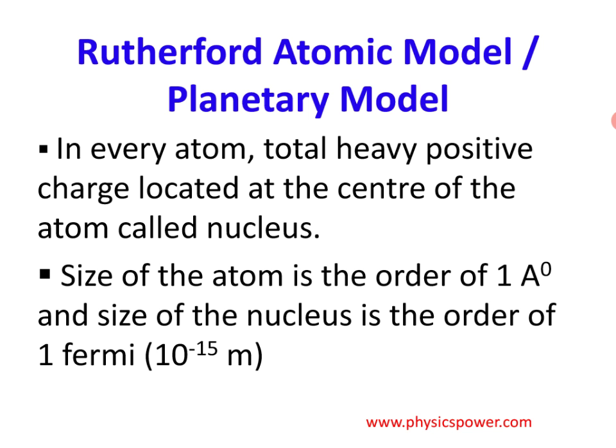Similarly, when Rutherford's experiment was performed, the flashes on the ZnS screen were mostly circular — along a particular circle. This means there is some obstruction, and that obstruction is spherical in shape. The alpha particles deviate along a circle, and the flashes appear in that circular pattern. From this, it was concluded that the nucleus is spherical in shape.